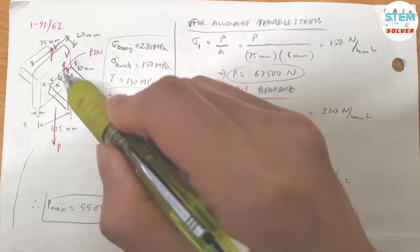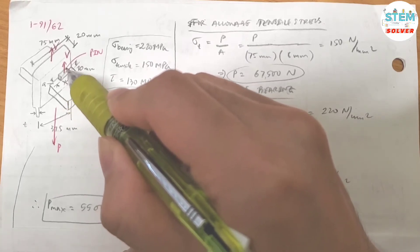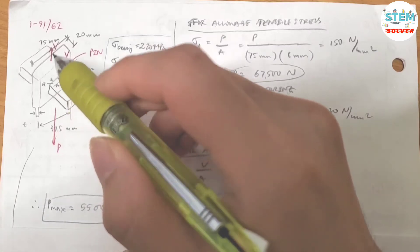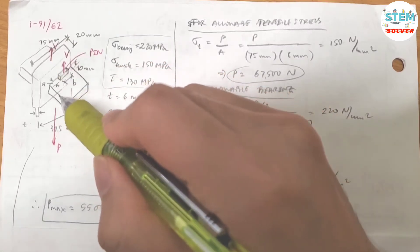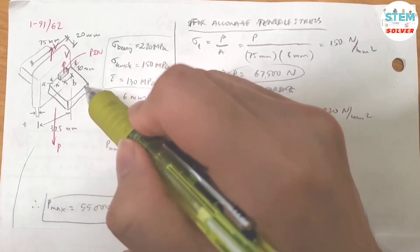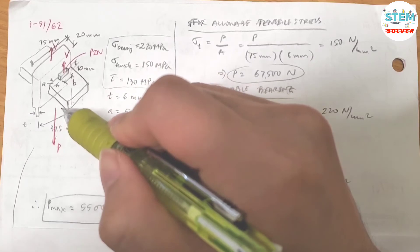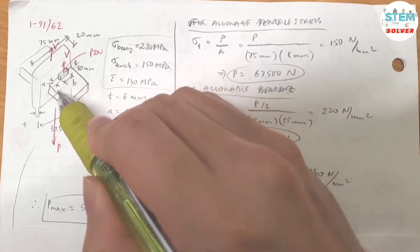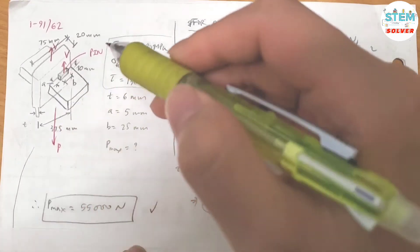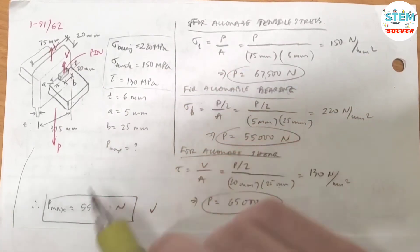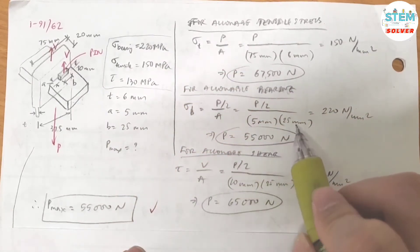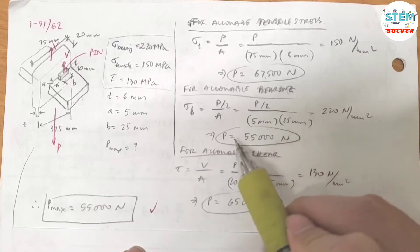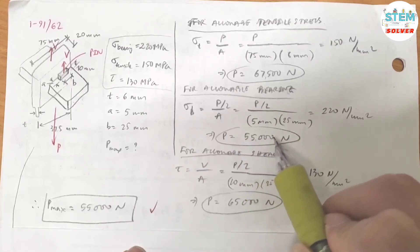It will pull this portion down and tear down to the blade. The area is equal to A times B: A is 5 mm, B is 25 mm, so 5 times 25 equals 125 mm². Using the allowable bearing stress of 220 MPa, P works out to 55,000 N.